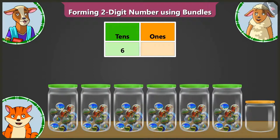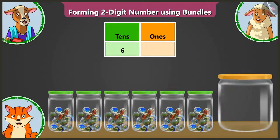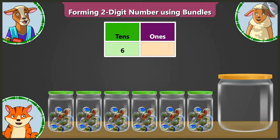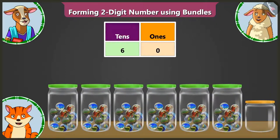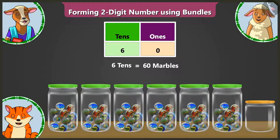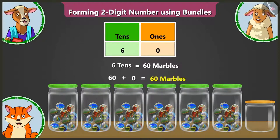Now, you tell me, Lily — how many marbles are there in the seventh jar? Ma'am, the seventh jar is empty. Yes, there is not even one marble in the seventh jar. So we have to write zero in the ones box. Now we have six in the tens box, which means sixty, and zero in the ones box, which means there is not even one marble there. So there are sixty marbles in total.